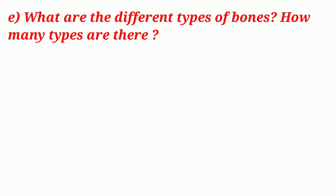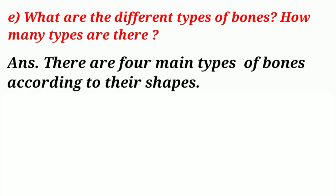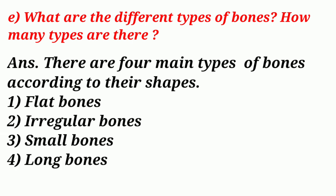Question 5e: What are the different types of bones and how many types are there? Answer: There are 4 main types of bones according to their shapes. They are: 1. Flat bones, 2. Irregular bones, 3. Small bones, and 4. Long bones.